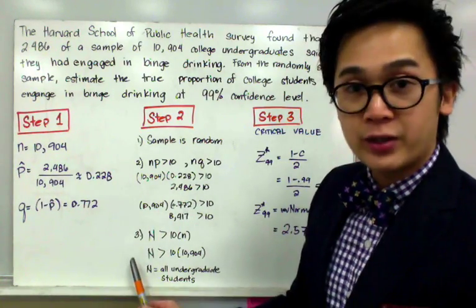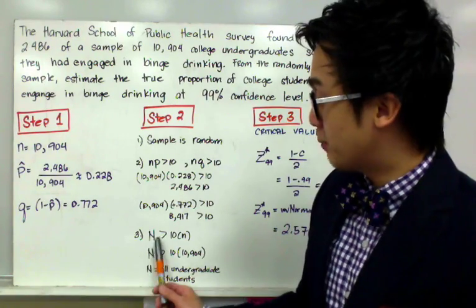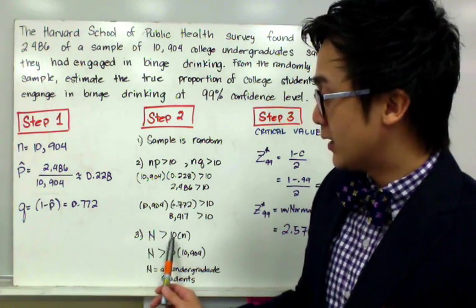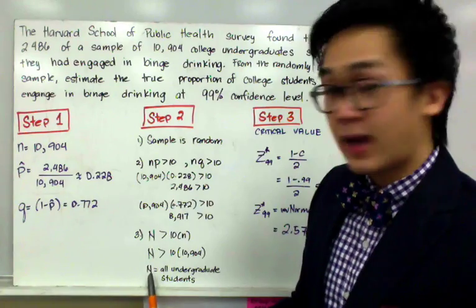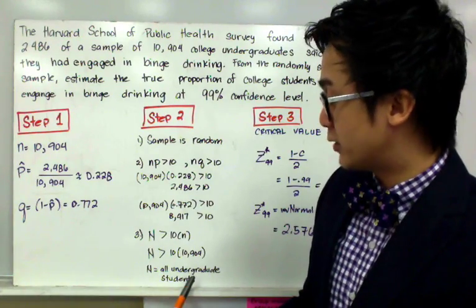Let's move on to our third condition of independence, which is big N should be greater than 10 times your sample size. Since big N is all the undergraduate students,